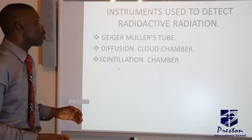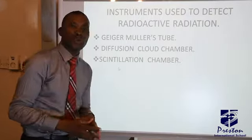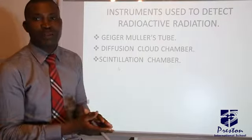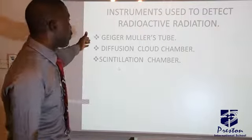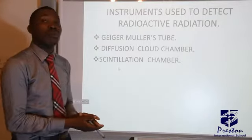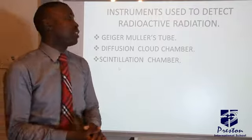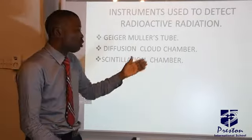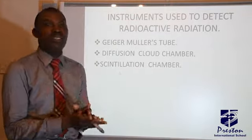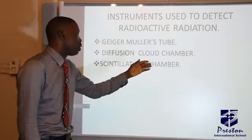Instruments used to detect radioactive radiations. There are several instruments used to detect radioactive radiation. Here we just listed three. The first is the Geiger-Müller tube, which is the most common instrument. It works by ionization of gas. Then we have the diffusion cloud chamber, also it works by ionization of gas. And then we have the scintillation chamber.